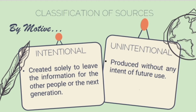Historical sources may also be classified according to motive, and there are two types: intentional and unintentional. Intentional sources were created solely to leave information for other people or the next generation — the intention is to make the information long-lasting, not just for that moment but for lifelong use. An unintentional source, on the other hand, is produced without any intent of future use.